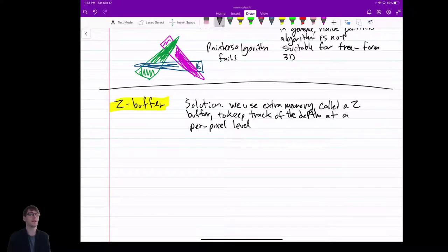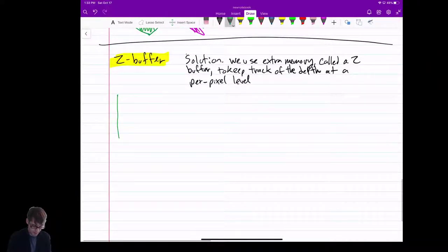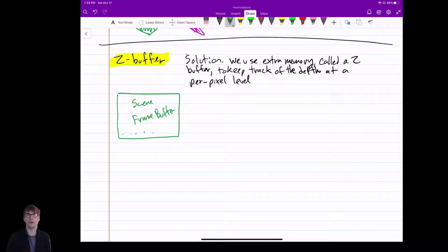At a per pixel level, per fragment level, I probably should say. So you can imagine we have our good old-fashioned scene frame buffer, and the scene frame buffer holds the pixel values of our scene, so we know what to draw on the raster. Now next to it, we allocate memory the exact same size called the Z Buffer.